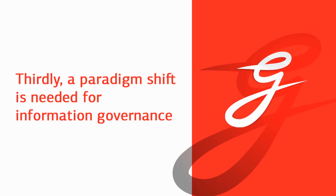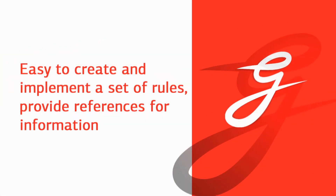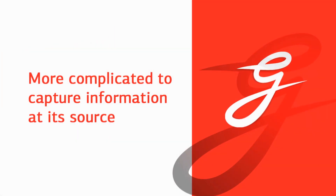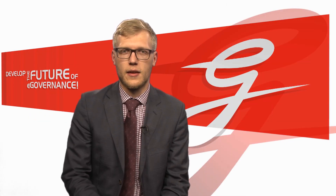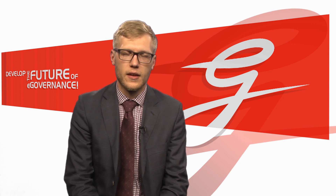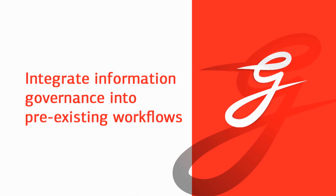The third aspect is that information governance requires a paradigm shift. Some of it might be quite easy — for example, creating a set of rules and then implementing them, then creating references for where the information comes from, what is being done to it, and where it goes. But some of it might be quite complicated, like capturing information at its sources, because people like to save data in their personal computers, emails, and mailboxes, and for an organization it might be quite difficult to capture it from there.